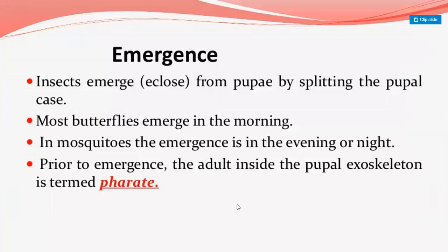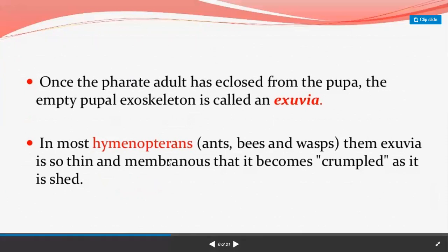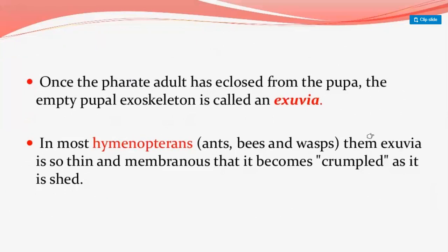Regarding emergence: insects emerge from the pupa by splitting the pupal case. Most butterflies emerge in the morning, while in mosquitoes emergence is in the evening or night. Prior to emergence, the adult inside the pupal exoskeleton is termed a 'pharate.' Once the pharate adult has enclosed from the pupa, the empty pupal exoskeleton is called an 'exuvia.' In most Hymenoptera, like ants, bees, and wasps, the exuvia is so thin and membranous that it becomes crumpled when shed.